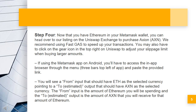You will see a 'From' input that should have ETH as the selected currency, pointing to an estimated output that should have AXN as the selected currency. The 'From' input is the amount of Ethereum you will be spending, and the estimated output is the amount of AXN that you will receive for that amount of Ethereum.